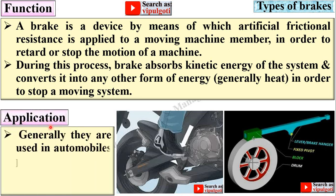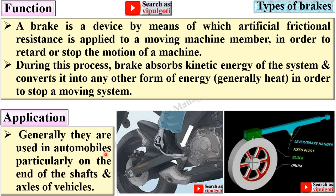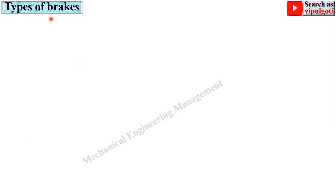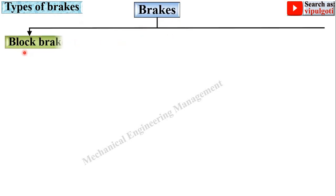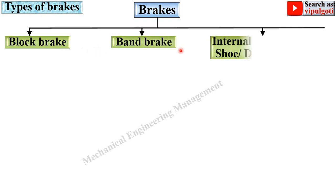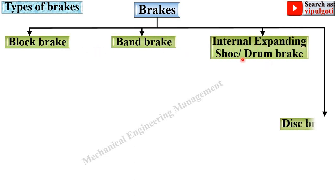Brakes are generally used in automobiles, particularly on the shafts and axles of vehicles. The classification of brakes includes: block brake, band brake, internal expanding shoe brake (also called drum brake), and disc brake.